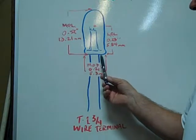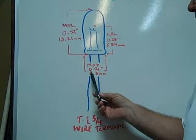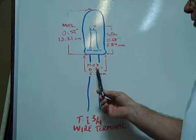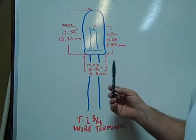The maximum outer diameter of the glass envelope is 0.21 inches, 5.3 millimeters.